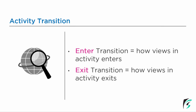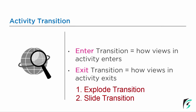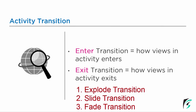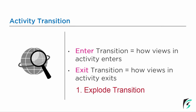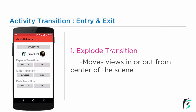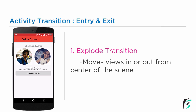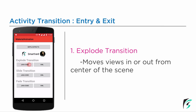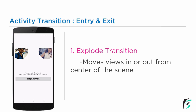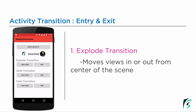Enter and exit transition can be further classified into explode transition, slide transition, and fade transition. We will learn about them in detail in the upcoming videos. In this video, we will be proceeding with the explode transition. The explode transition causes the activity to move in or out from the center of the scene. On clicking this button, we can see the views in the UI move into the center of the screen, and on pressing the exit button, it moves out of the screen from the center.